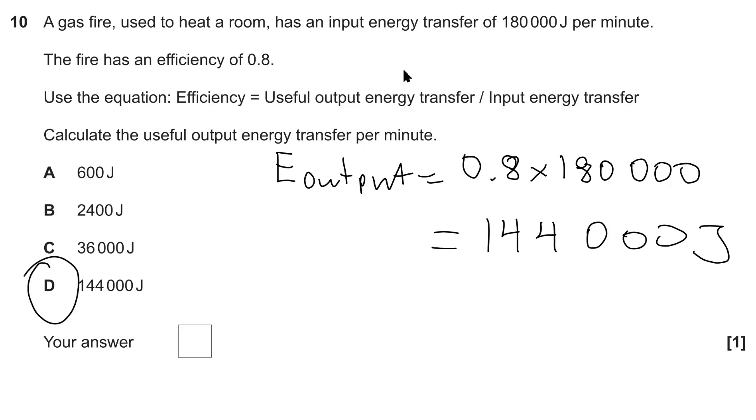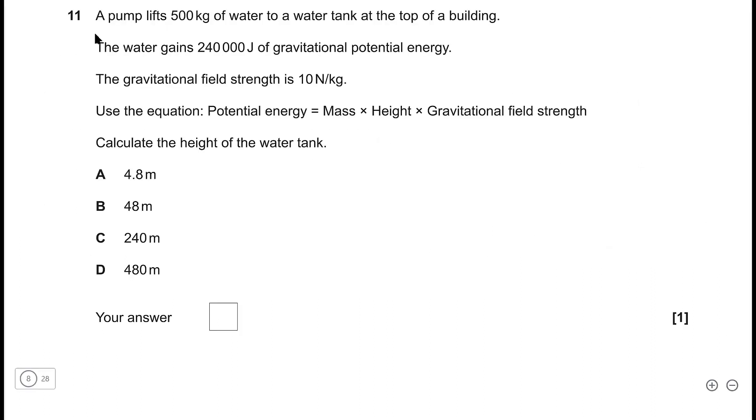Question 11: we have a pump which lifts 500 kg of water to a water tank at the top of a building, and the water gains 240,000 joules of gravitational potential energy. Given the gravitational field strength is around 10 newtons per kilogram, we need to use this equation to calculate the height of the water tank.